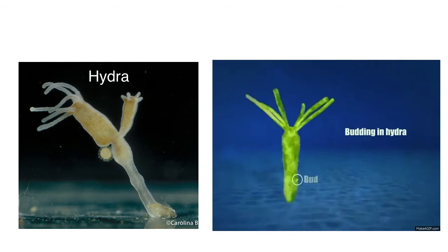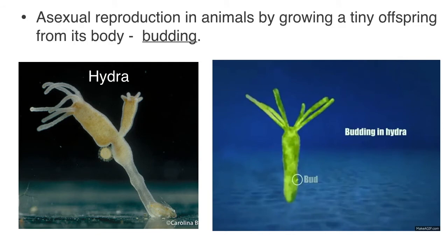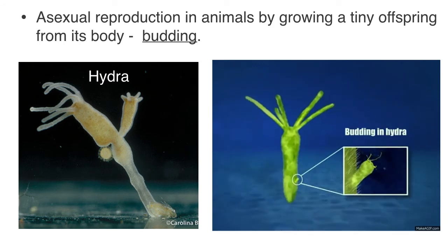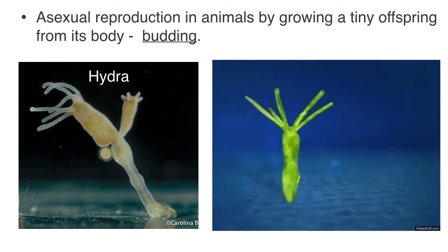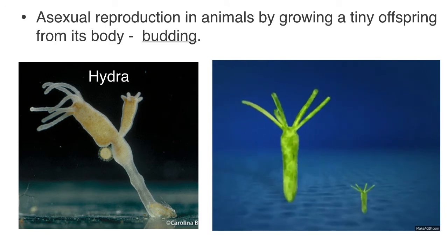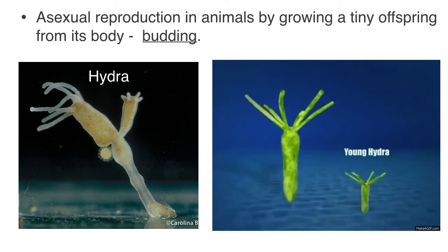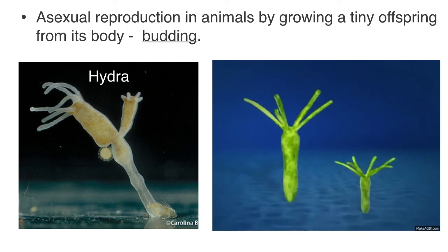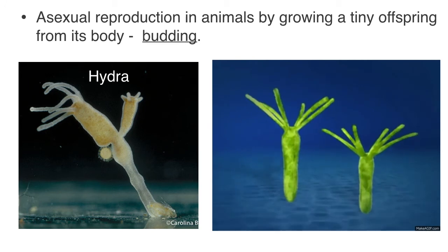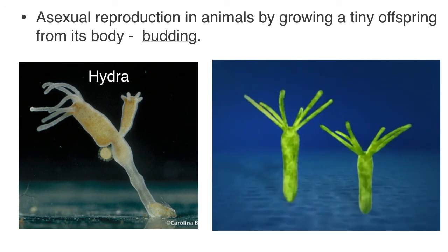Another animal called a hydra, which is a tiny aquatic animal, reproduces by a process called budding. Budding basically involves the growing of a baby or an offspring that is genetically identical to the parent off of the body of the parent. The hydra grows a young baby hydra off of its body, and then eventually that bud breaks off and can grow into an adult hydra that is genetically identical to its parent.